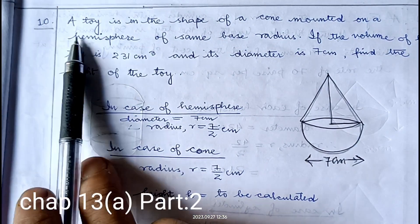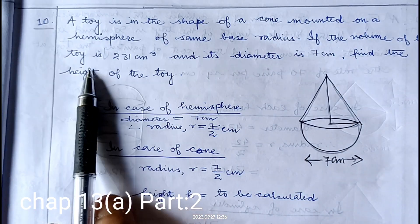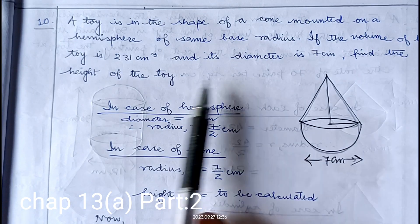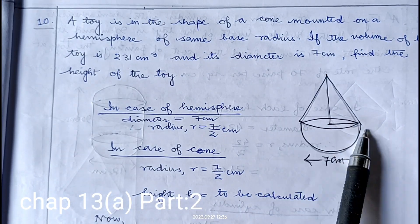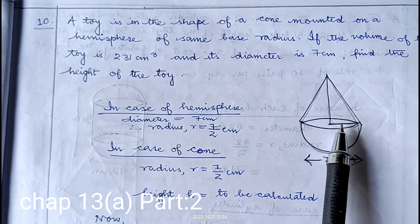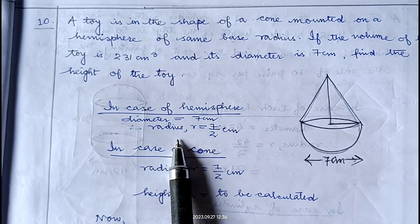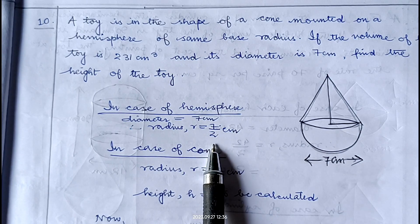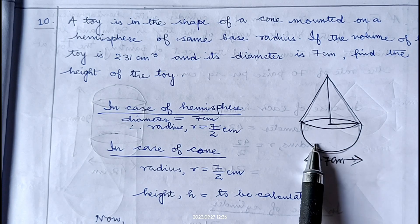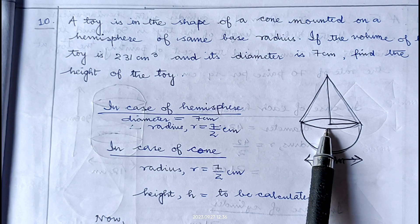In question number 10, a toy is in the shape of a cone mounted on a hemisphere of the same base radius. If the volume of the toy is 231 centimeter cube and its diameter is 7 centimeter, find the height of the toy. Since diameter is 7, radius will be 7 by 2. In case of hemisphere and cone both, radius is 7 by 2, and the height of the cone is to be calculated.